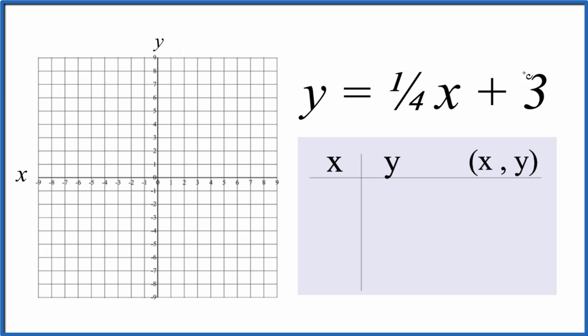We'll put a value in for x, do the math, we'll get a value for y, then we graph the point here on the graph paper. So I like to start out with zero. One-fourth times zero, that's zero. So zero, and then y equals three.